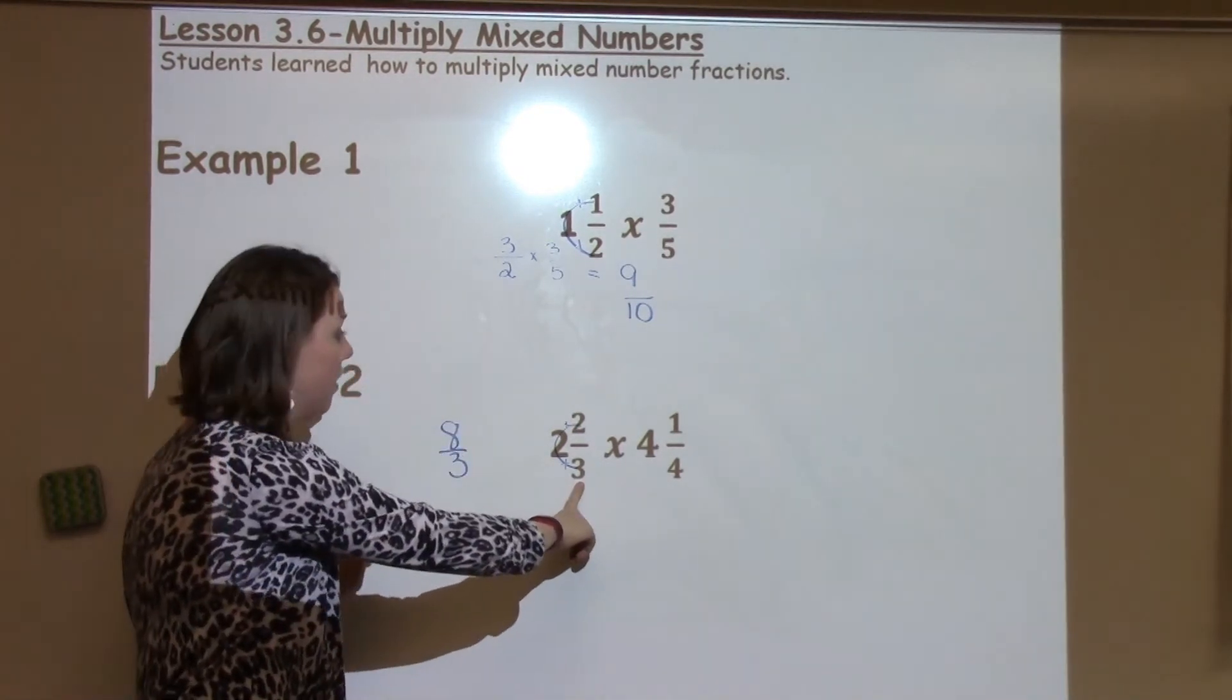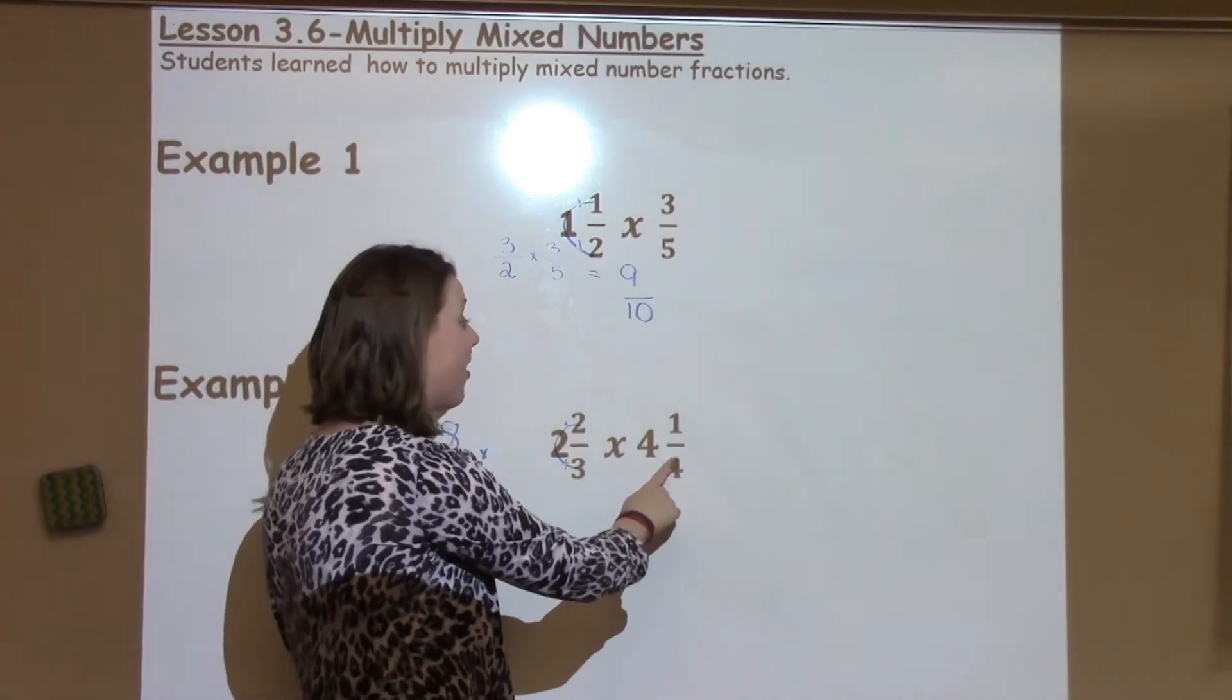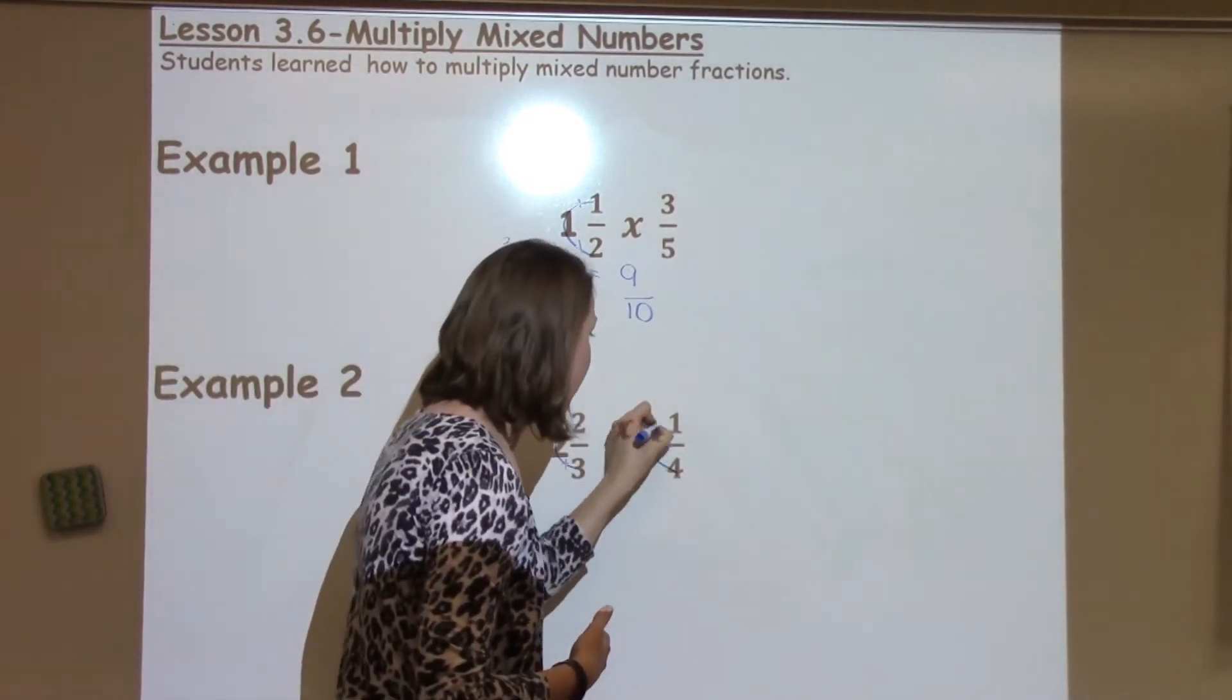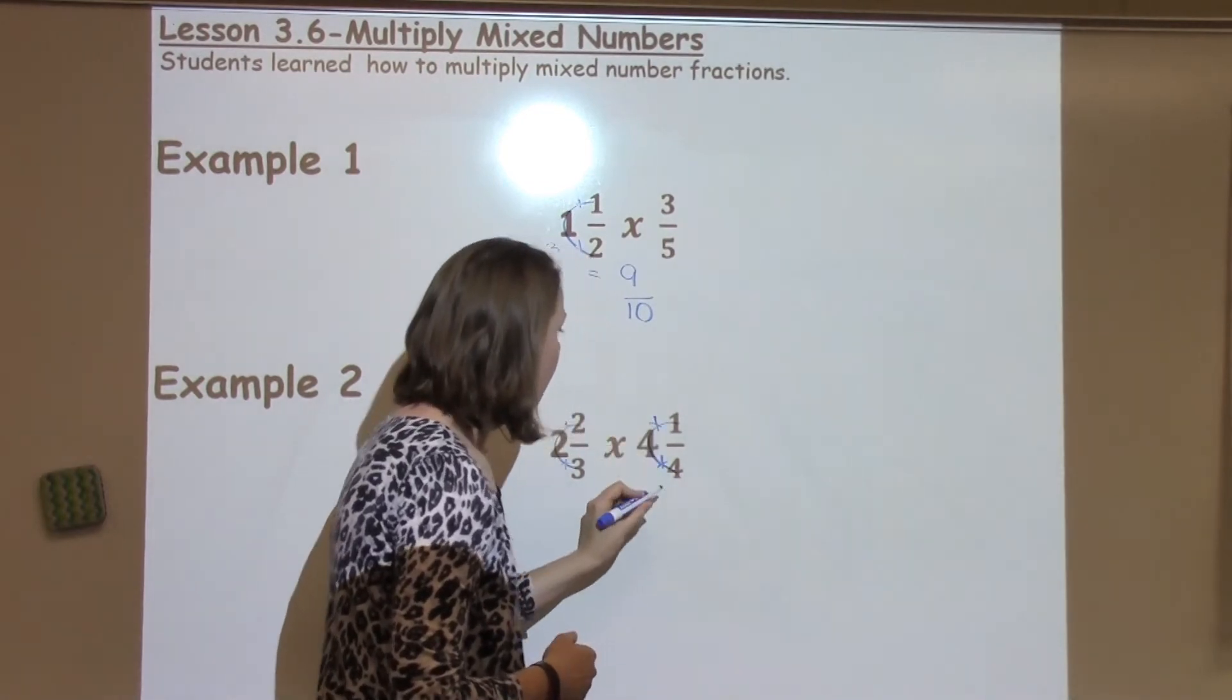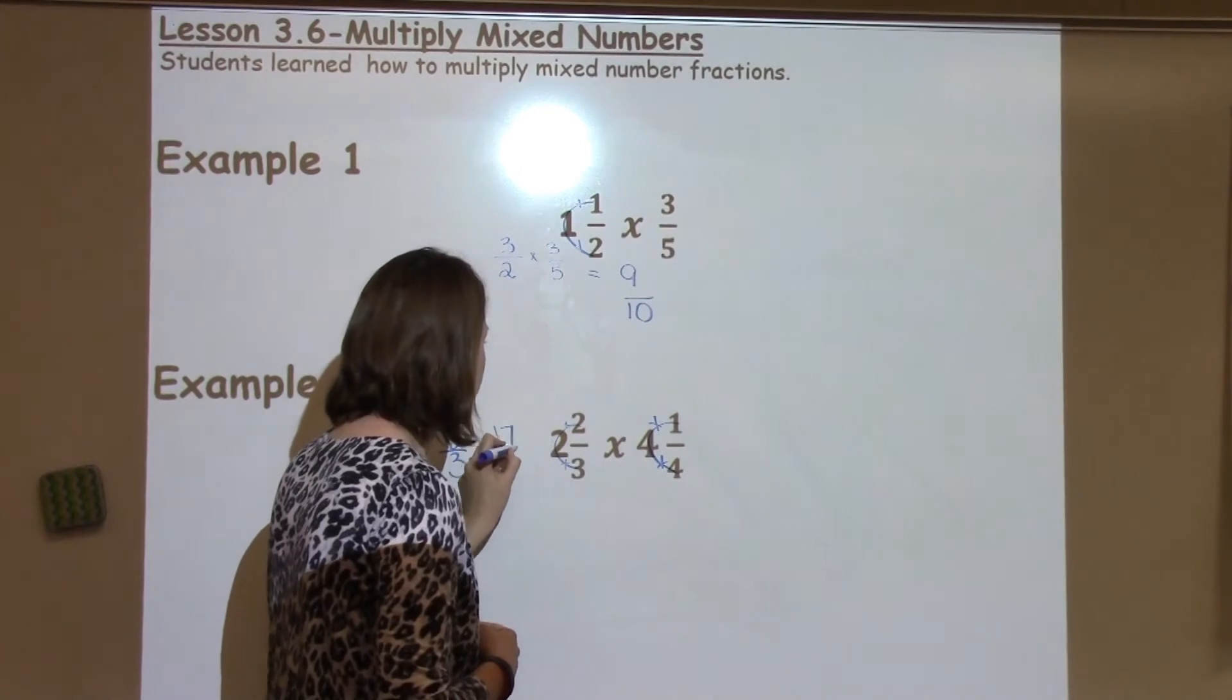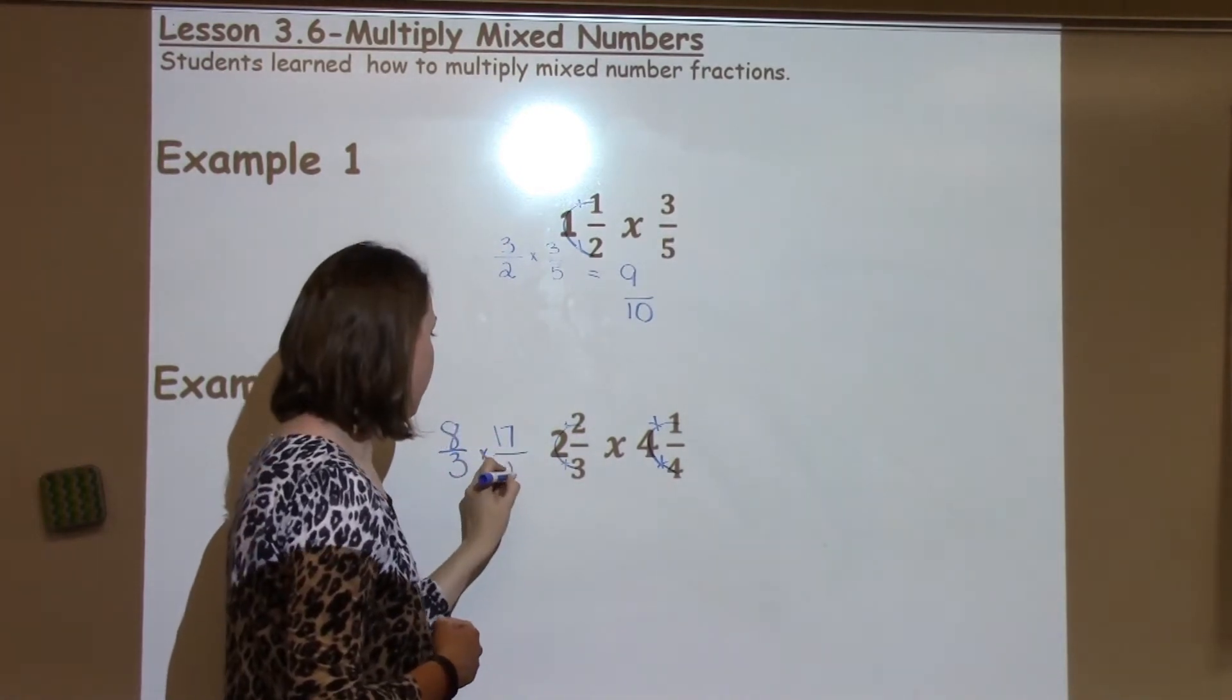Remember my denominator comes from the problem, times, now I've got another mixed number, so I need to do it another time. I'm going to multiply and add again. 4 times 4 is 16, plus 1 is 17. So I've got 17 fourths.